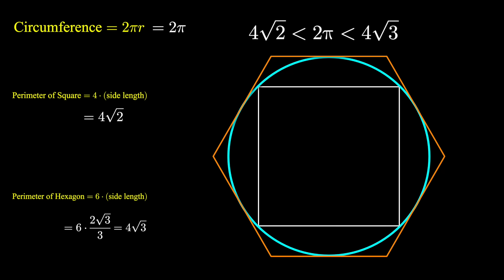The perimeter of the square should be less than the perimeter, or the circumference of the circle, which should be less than the perimeter of the hexagon.